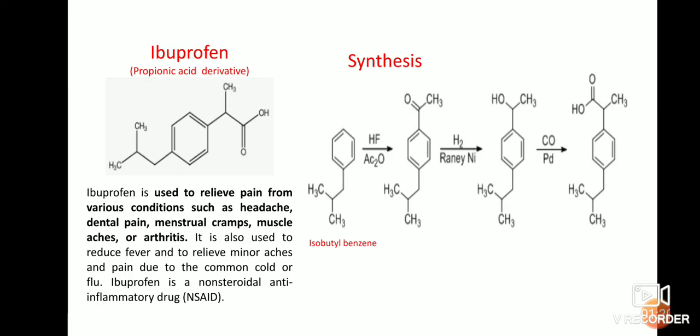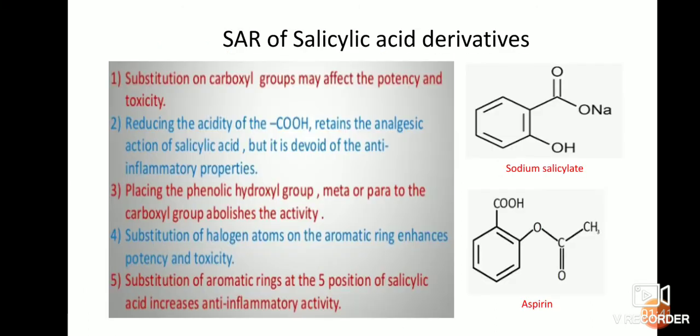For the synthesis of ibuprofen: isobutylbenzene is treated with acetic anhydride in the presence of a hydrogen fluoride catalyst to introduce a CH₃CO group on the benzene ring. This undergoes reduction converting the carbonyl group to a CH₂-hydroxyl group, and also undergoes reaction with carbon monoxide to form ibuprofen.